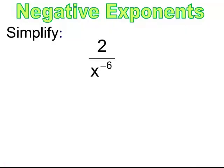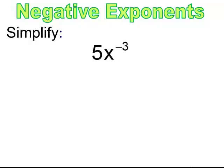Pause and try. In this case you get 2x to the 6th. Pause and try. In this case you end up getting 5 over x to the 3rd.